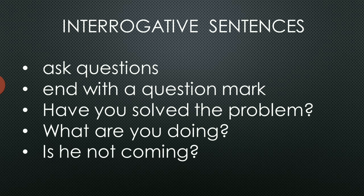For the WH interrogative form, the structure is: WH question word plus helping verb plus subject plus main verb. For example, 'What are you doing?' — 'what' is the WH question word, 'are' is the helping verb, 'you' is the subject, and 'doing' is the main verb. For interrogative negative, for example 'Is he not coming?' — 'is' is the helping verb, 'he' the subject, and 'not' is inserted between the subject and the main verb 'coming.' In short form, 'isn't he coming?' where 'not' is added to the auxiliary verb.